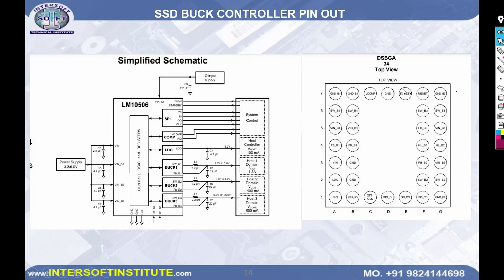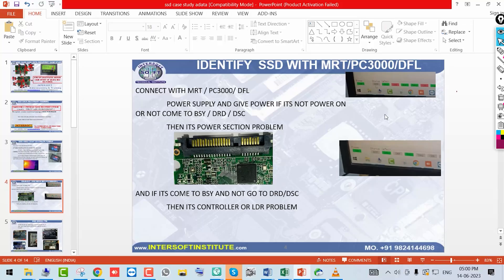The buck controller has a pinout where the power supply gives 3.3V to 5V input, and it produces three different output voltages — Buck 1, Buck 2, Buck 3 — for example Buck 1 at 1.3A. These different power rails feed the controller IC and NAND. With MRT PC3000, after confirming these signals are okay, you can proceed with data recovery.